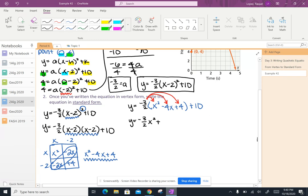So negative 3 halves times negative 4 is going to give you 6x. And then over here, I've got minus 6 because a negative times a positive is a negative. And then we're going to bring down that plus 10 at the end there.